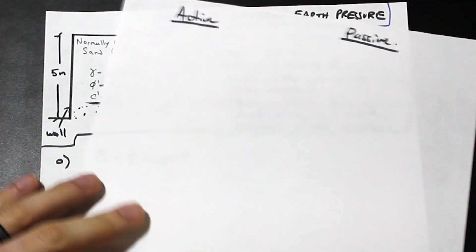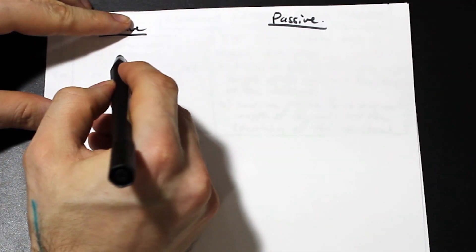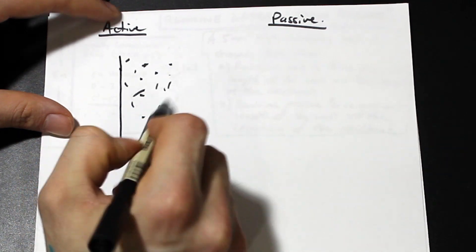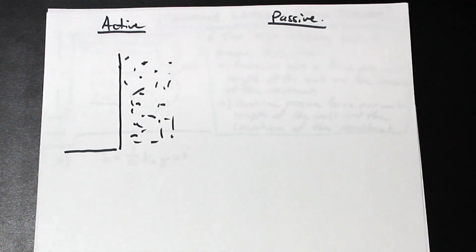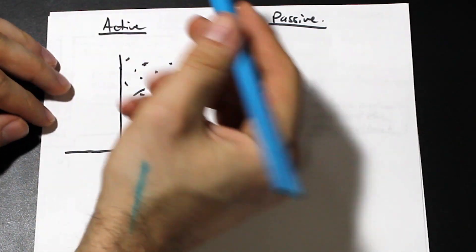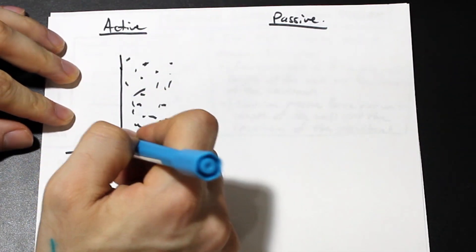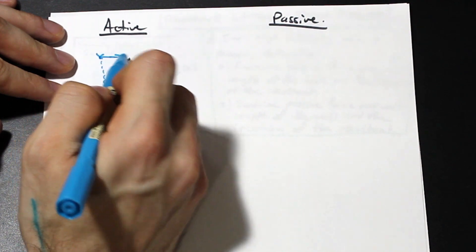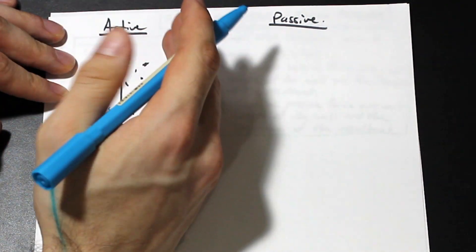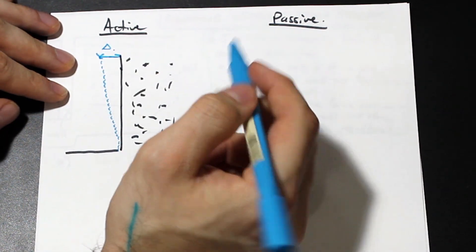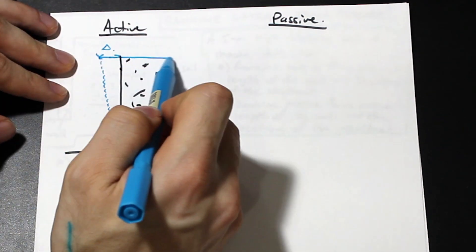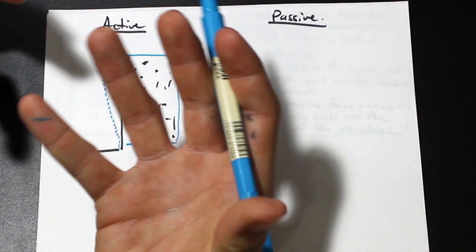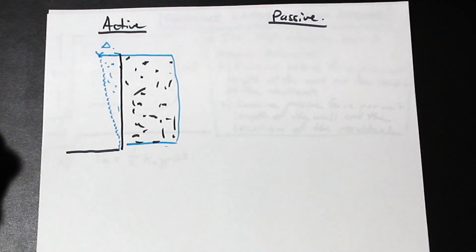So what is Rankine's lateral earth pressure? What's active pressure and what's passive pressure? For active pressure, let's say we have our retaining wall with all of our soil acting on it. The wall can be at rest, but we're looking at active and passive for this video. For active pressure, the soil is exerting some pressure on the wall — this is the displacement delta — and the soil has expanded, meaning there's more area for it, which means less pressure. That's what we call active earth pressure.